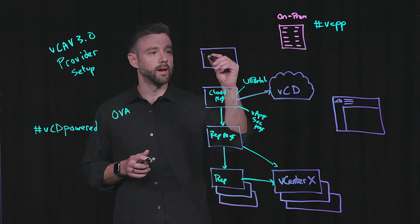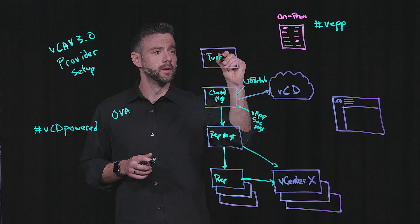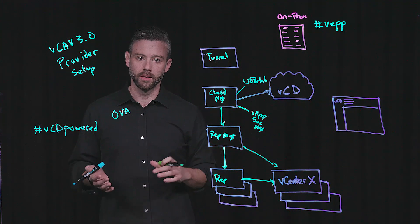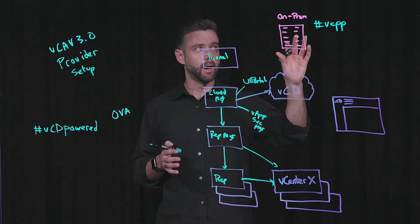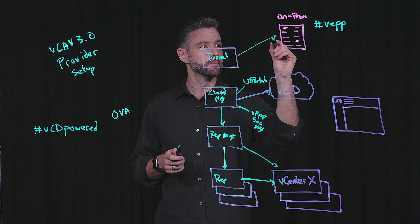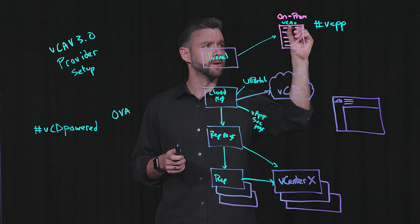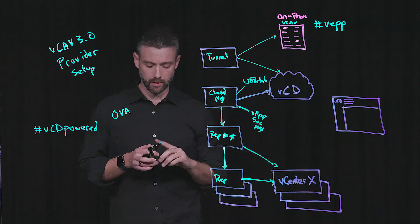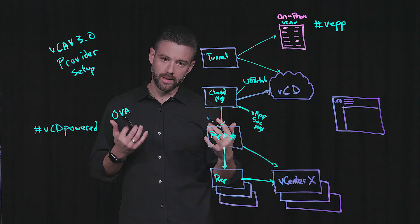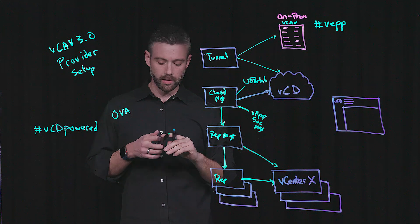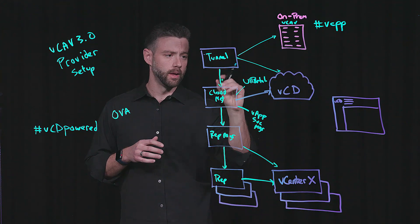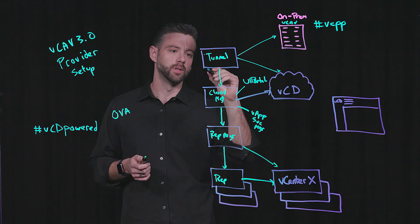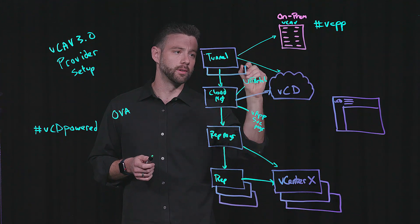Next up, we have the Cloud Tunnel Nodes. The Tunnel Nodes are responsible for providing that secure connectivity between an on-prem environment and a corresponding vCAV appliance, but also a vCloud environment. This is actually bringing in that traffic, routing it between the environments, and making sure that we have that secure connectivity across the overall architecture.